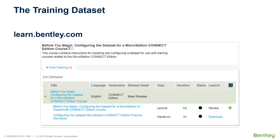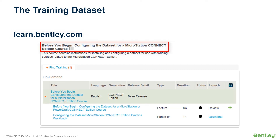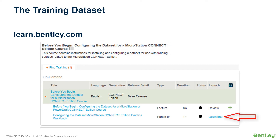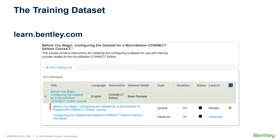For more information on the workspace and loading worksets for training, go to learn.bentley.com and see the course before you begin configuring the dataset for a MS Connect Edition course. You can click download to download and review the contents of the zip file, which contains the PDF of the practice workbook. If you would rather watch a one minute video, you can review the lecture as well.